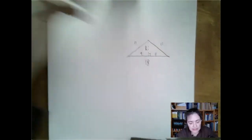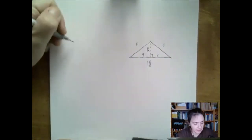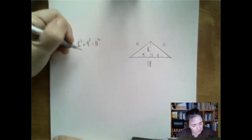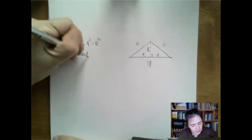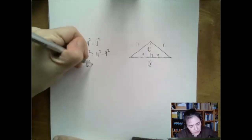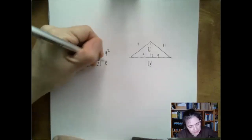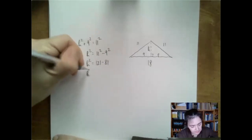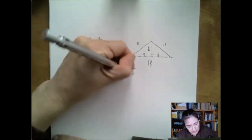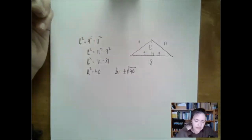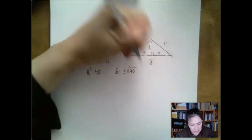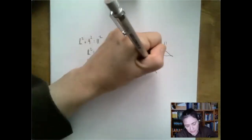If we label the missing side H, then by the Pythagorean theorem: H squared plus 9 squared equals 11 squared. So H squared is 11 squared minus 9 squared, which is 121 minus 81, which is 40. So H is either the square root of 40 or its negative — but given that we're looking for a distance, negative numbers are ruled out.